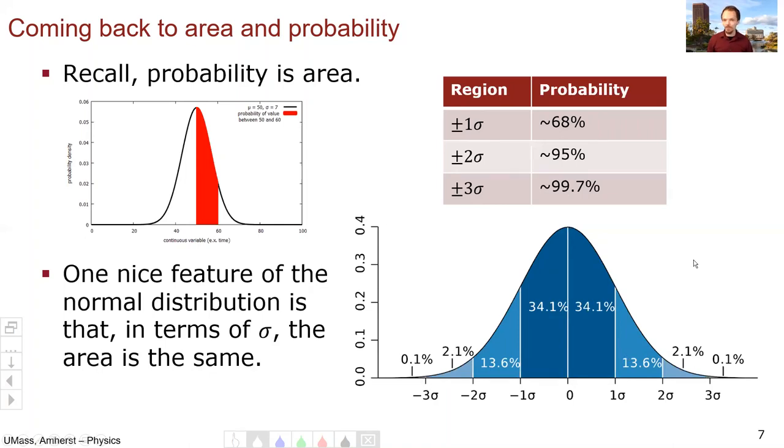These are really good numbers to have sort of in your head because in many research papers that you might read, you'll read about one sigma, two sigma, three sigma effects. And so knowing these 68, 95, 99.7 rule, as it's called, can be really helpful to help you understand, okay, in terms of probability, what are these results talking about?